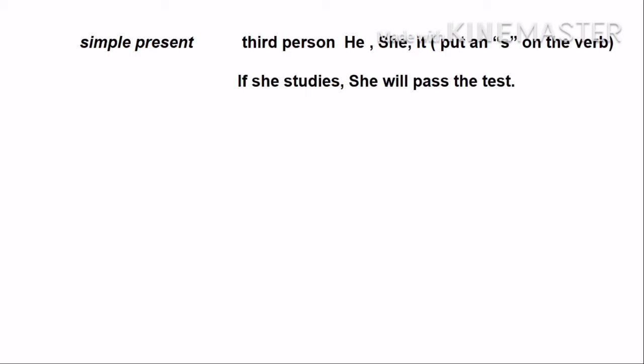Let's review simple present. Simple present talks about daily routines or habits and we have to use it properly. One mistake we've been making in the homeworks is not putting the S on the third person. Remember, I have to put an S on he, she, it when using simple present. I cannot say 'if she study, she will pass the test' — I have to say 'if she studies, she will pass the test.'